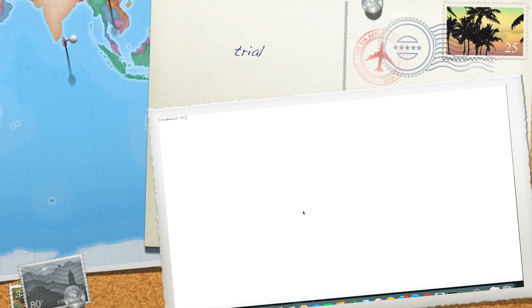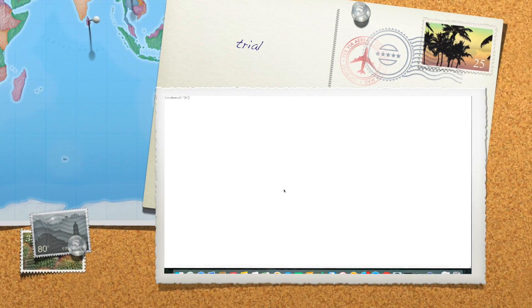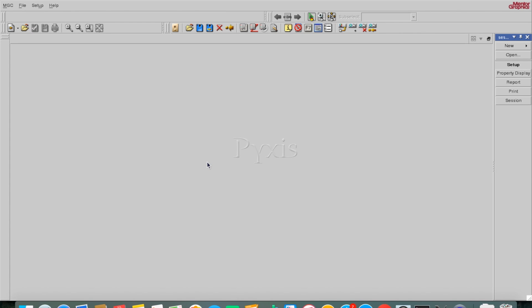Hello everyone, I'm Rahul and in this video I'm going to explain how to draw a schematic and simulate it on the tool Pixis, which is from Mentor Graphics. For that we have some commands. First we will type 'csh', then 'source mentor.cshrc', after that 'atk_daic'. This will take you to a window called Pixis Schematic.